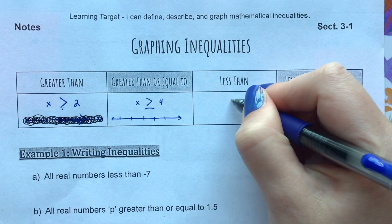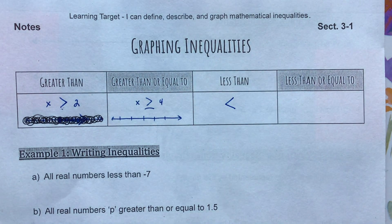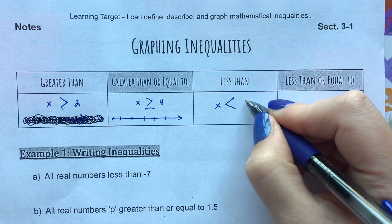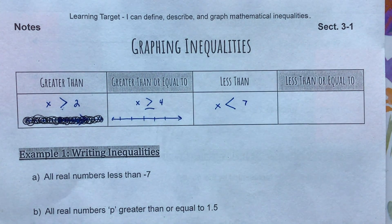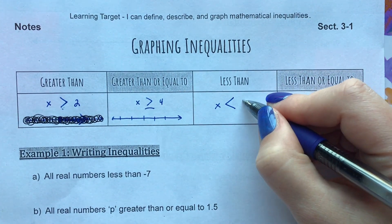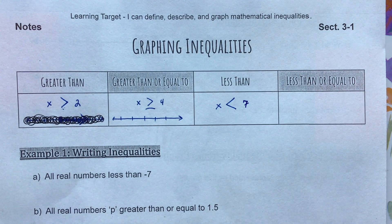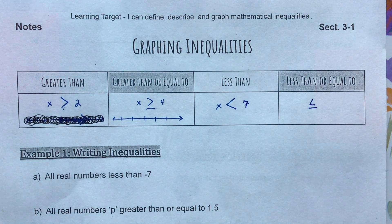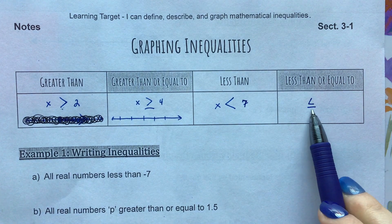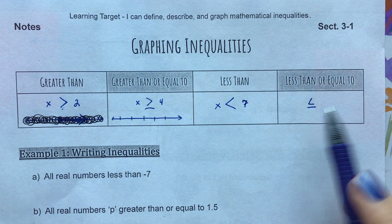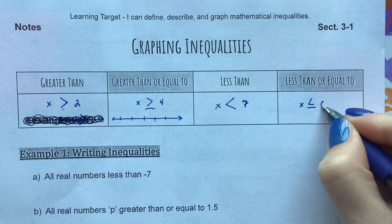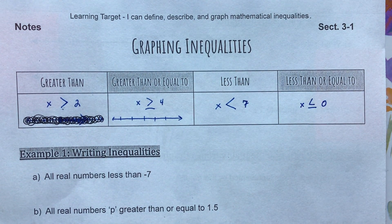Then we have our less than symbol. It's going to go in the opposite direction, pointing to the left. If we put in our variable x and the number seven, that gives us x is less than seven. We also have a less than or equal to symbol — that's the less than symbol with the half of an equal bar. So we could put in our variable and a number, like x is less than or equal to zero.